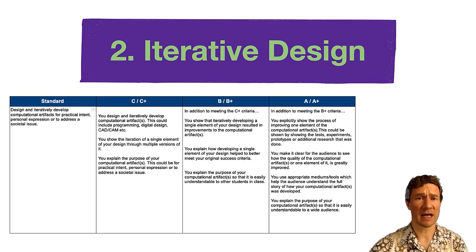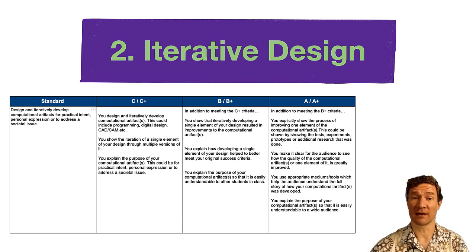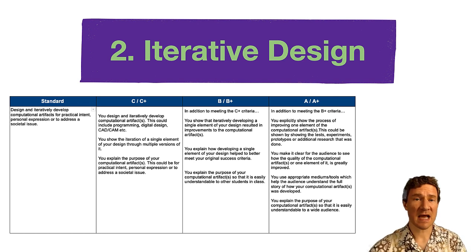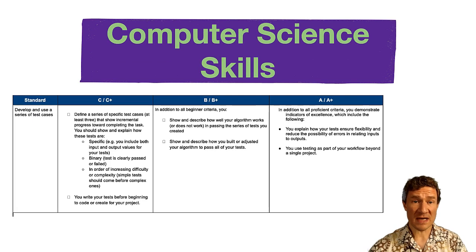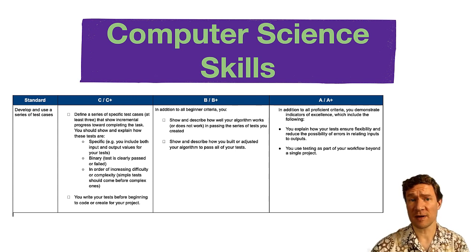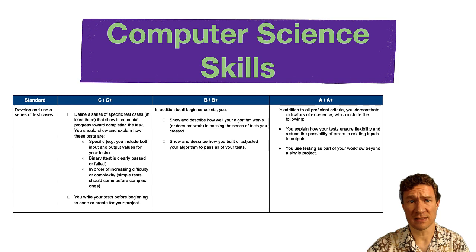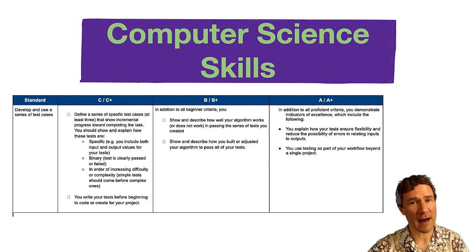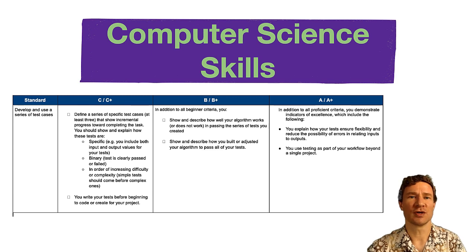Standard number two is about iterative design — the idea of how a single element of your design has been changed over time. How have you improved it with feedback, learning new skills, and testing your product or app with users? The rest of the standards for the course are grouped together as computer science skills, which could be anything from understanding how variables work to your use of feedback in the process of completing a project. Check the course page on Schoology for more information. You'll be able to demonstrate mastery over the course of the entire semester, which is a great opportunity to show a growth mindset and get better as you develop your skills.